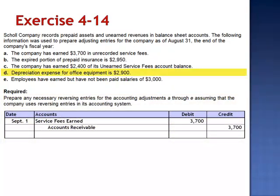Letter D: depreciation expense for office equipment is $2,900. The adjusting entry on August 31st is a debit to depreciation expense and a credit to accumulated depreciation. This reduces the value of the assets and is not going to be reversed.